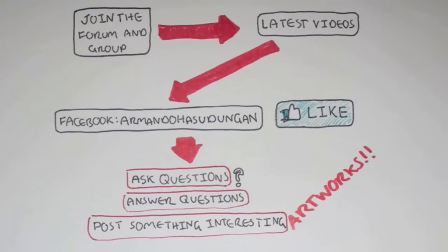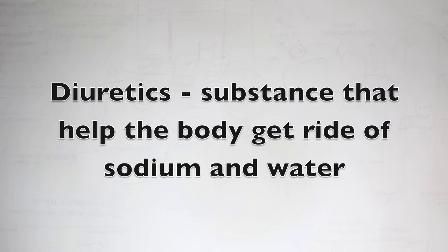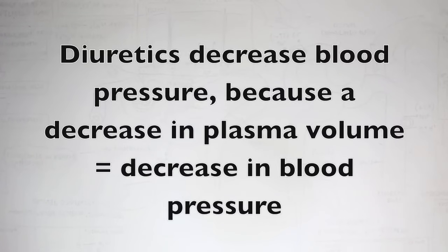In this video, we're going to look at diuretics. Diuretics work on the kidneys — specifically the nephrons of the kidneys. Diuretics are substances that help the body get rid of sodium and water. Diuretics decrease blood pressure because a decrease in plasma volume, a decrease in water, equals a decrease in blood pressure.